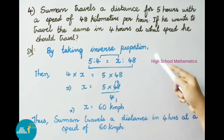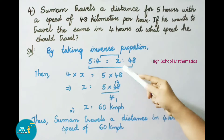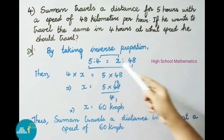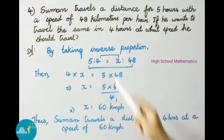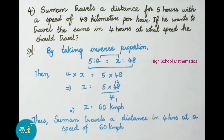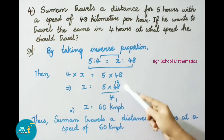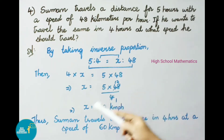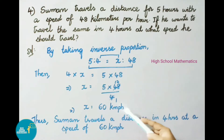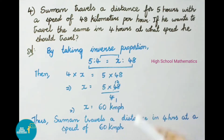By taking inverse proportion: 5 is to 4 equals x is to 48. We know product of means is equal to product of extremes. Then 4 into x equals 5 into 48. That implies x equals 5 into 48 divided by 4. Since 4 into 12 equals 48, x equals 5 into 12, that is 60. Therefore x value is 60 kilometers per hour.